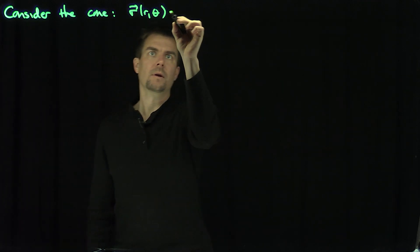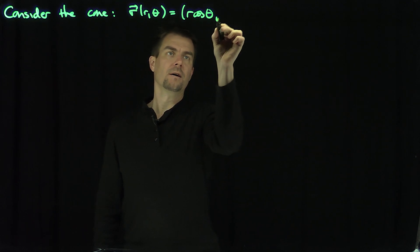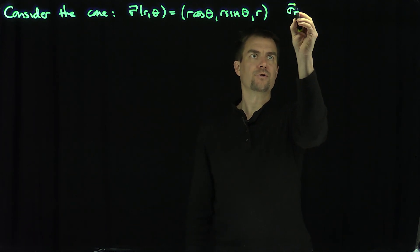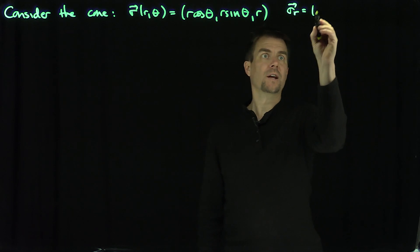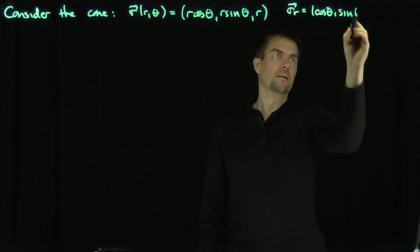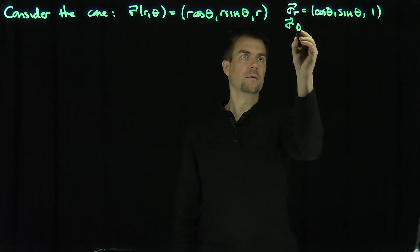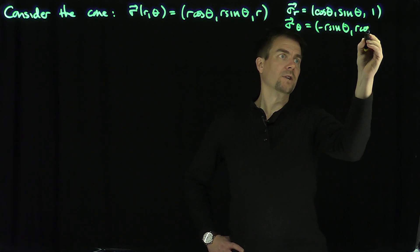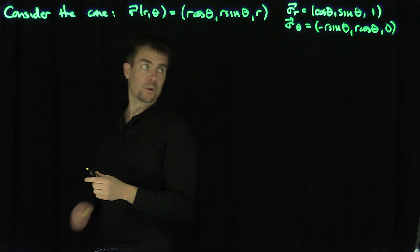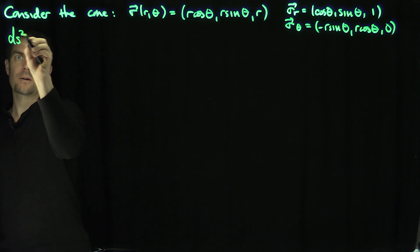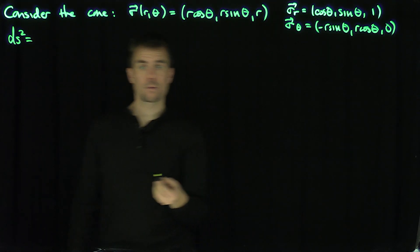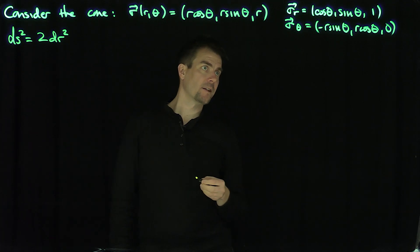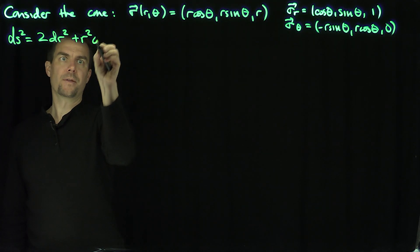Sigma of r and theta is (r cos θ, r sin θ, r). The tangent vector sigma_r is (cos θ, sin θ, 1), and sigma_theta is (-r sin θ, r cos θ, 0). Those vectors are clearly perpendicular to each other. Our metric ds² = sigma_r · sigma_r dr² + sigma_theta · sigma_theta dθ² = 2 dr² + r² dθ². And there's our metric on the cone.